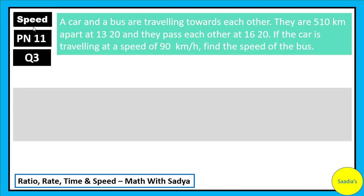Hello! In this video, we are going to solve a question involving speed. This is Practice Now 11, question number 3 of New Syllabus Mathematics. The question reads: A car and a bus are travelling towards each other. They are 510 km apart at 1320 and they pass each other at 1620. If the car is travelling at a speed of 90 km per hour, find the speed of the bus.